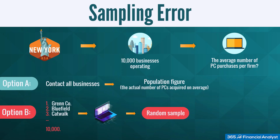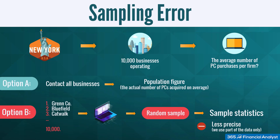However, we should remember something very important. By using the second approach, we wouldn't obtain a precise number. Because of the fact that we make inferences based on partial data, we would have sample statistics that, in all likelihood, deviate slightly from the population statistics.